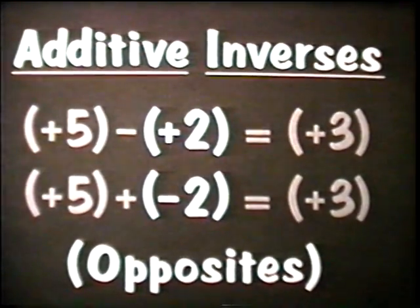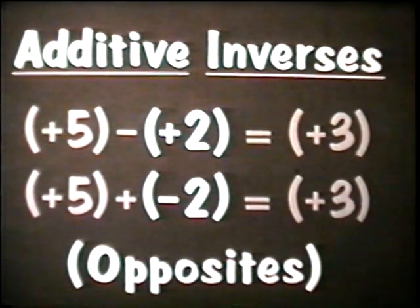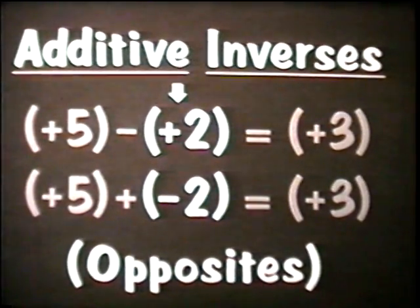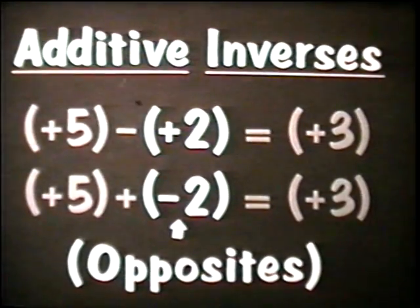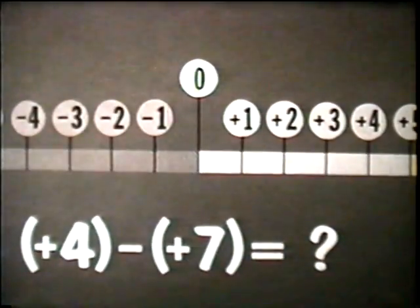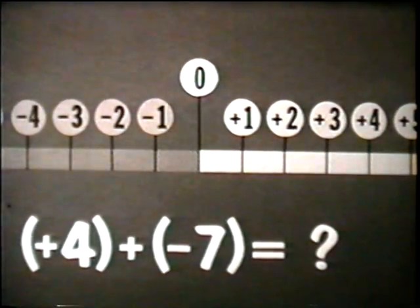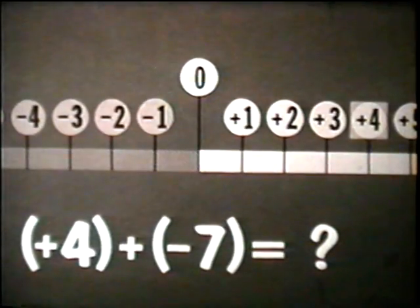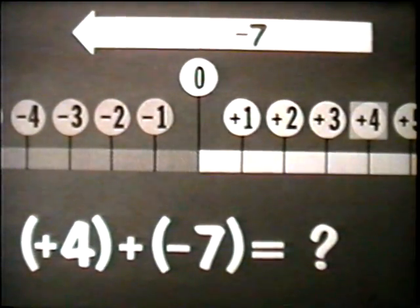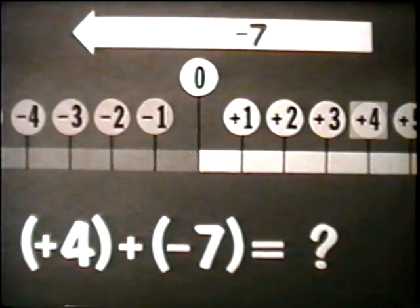So we can state the rule for subtraction in another way: to subtract a signed number, you add its opposite. Now let's look at a simple subtraction problem. In arithmetic, subtracting seven from four would mean from four objects, seven are to be taken — this is physically impossible. But a greater number can be subtracted from a smaller one by using signed numbers. You change the sign of the subtrahend and add. So to positive four, you add seven units in the negative direction. The answer is negative three.